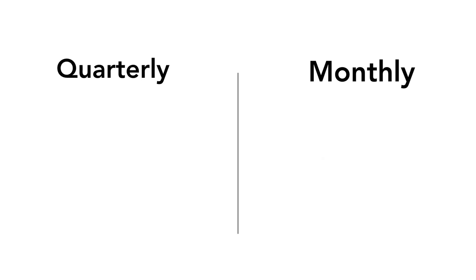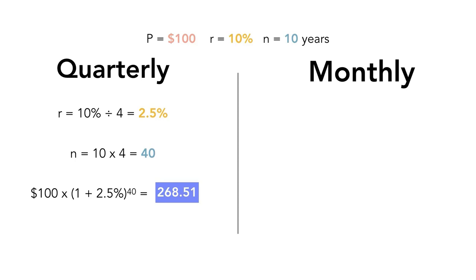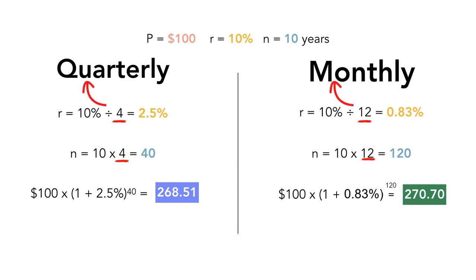Quarterly and monthly compounding is similar to semi-annual, except the interest will be given every quarter and month, respectively. Still, $100 over 10 years at 10%, for quarterly, the R will be 10% over 4, and N will be 10 times 4, to get a balance of $268.51. For monthly, the R will be 10% over 12, and N will be 10 times 12, to get a balance of $270.70. Again, notice how the number of periods, N, and discount rate, R, both match the compounding frequency, quarterly and monthly, of the interest rate.